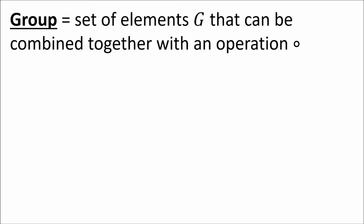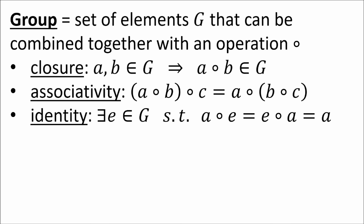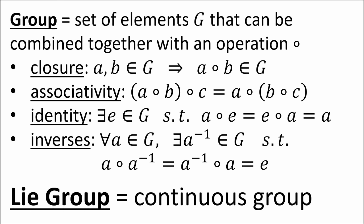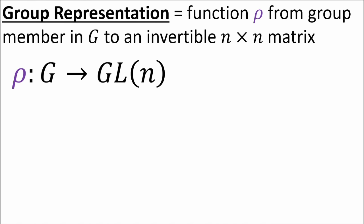A group is a set with an operation that obeys four properties: closure, associativity, existence of an identity element, and existence of inverses. Lie groups have the additional property of being continuous. A representation is a function rho that takes every member in a group G and assigns it to an invertible n by n matrix. So rho is a function from the group G to GL_n, the general linear group of invertible n by n matrices.